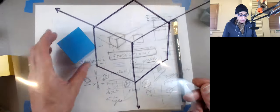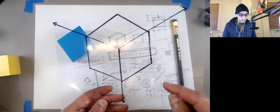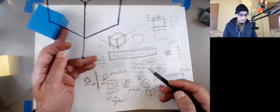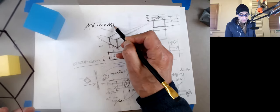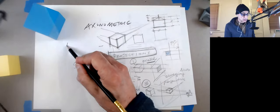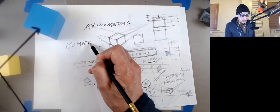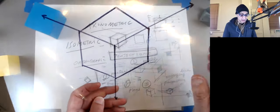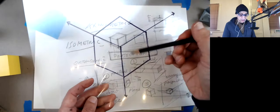This is the most common view of a cube in oblique or axonometric view. In particular, this is called isometric because the angles are all the same — these three angles. It's basically a hexagon split into three parts.